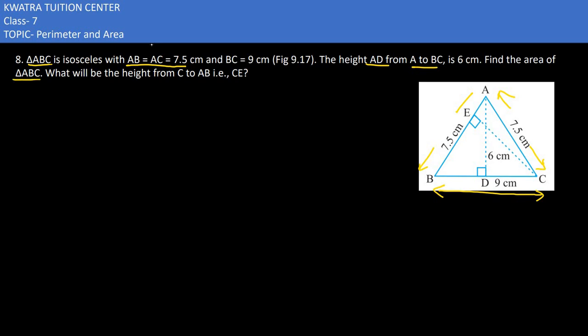Find the area of triangle ABC. We can easily find the area using half into base into height. Base in this case we'll take BC, height we'll take AD, because the height corresponding to base BC is AD. So half as it is, BC is 9, AD is 6. 2 and 6 cancel to 3, then 9 into 3 is 27 centimeter square.